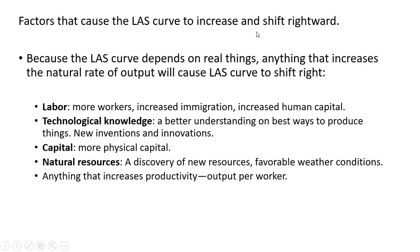Factors that cause the long-run aggregate supply curve to increase and shift rightward: because the long-run aggregate supply curve depends on real things, anything that increases the natural rate of output will cause it to shift right. For example, labor — more workers, increased immigration, or increased human capital will lead to more output, shifting the long-run aggregate supply curve right. Technology — technological knowledge, a better understanding of the best ways to produce things, new inventions, new innovations, and technological breakthroughs will all lead to economic growth, shifting the long-run aggregate supply curve rightward.